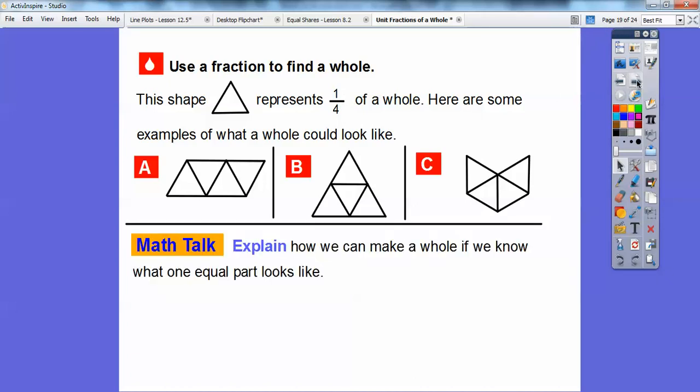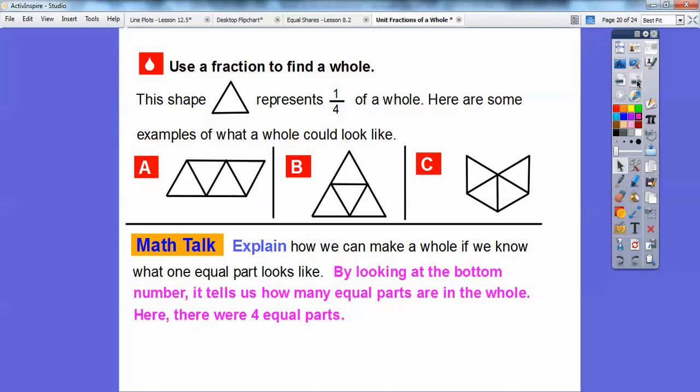Explain how we can make a whole if we know what 1 equal part looks like. Well, by looking at the bottom number, it tells us how many equal parts are in the whole. So, here it was 4. It told us there had to be 4 of them that are equal parts in there. If it was a 5, we'd just have 5 triangles on all of these.